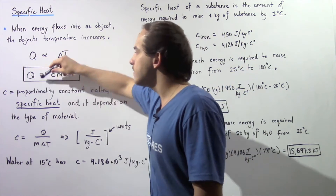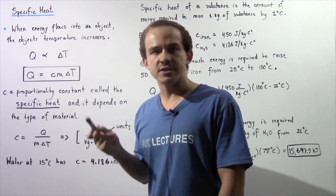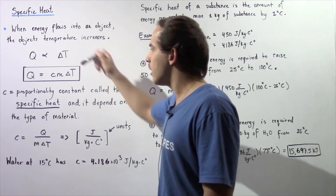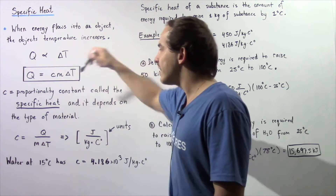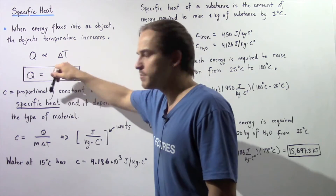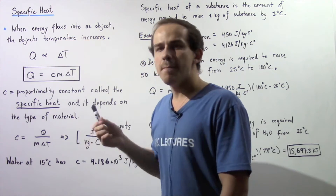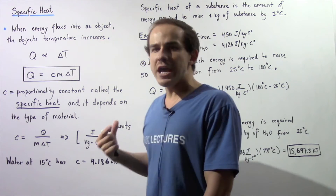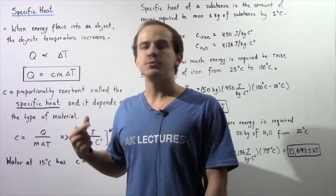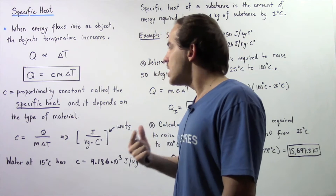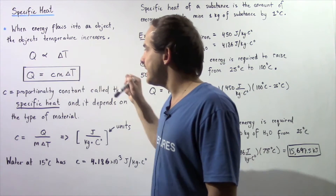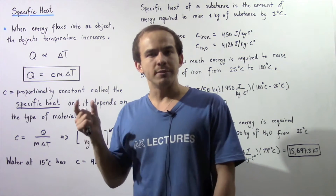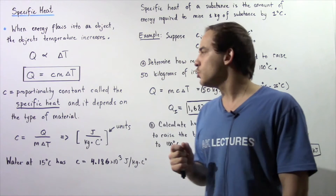The amount of energy that flows into or leaves our system, given in joules, is equal to the product of C — the proportionality constant, also known as specific heat — M, the mass of our object given in kilograms, and delta T, the change in temperature that our object experiences. Notice the specific heat, the C value, depends on the type of substance or material that we are using.